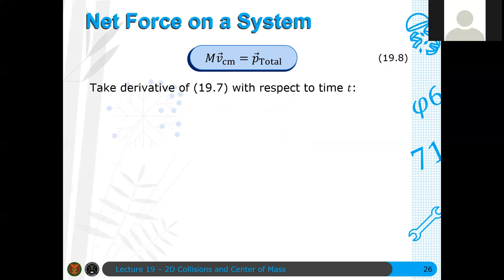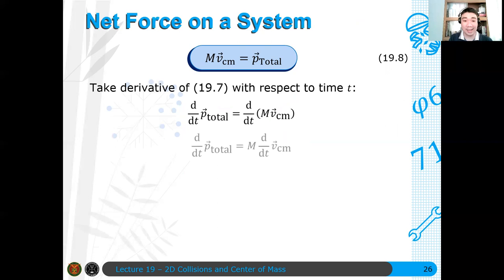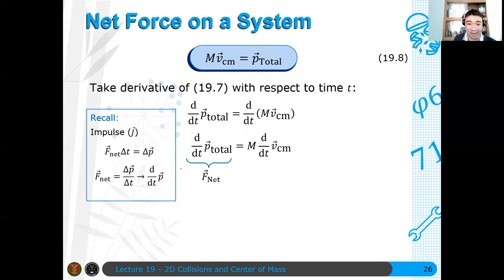exactly. Pero yung left-hand side ay acceleration. And we have, therefore, like that. And hence, dpdt is mdpdt. Recall that j is impulse. And therefore, the net force is dpdt by Newton's second law. And hence, this is just the net force. And this is simply the acceleration of the center of mass. Diba? So, this is your ACM. Diba? And hence, from this, ano mangyayari? And we have this equation, F net is MACM.